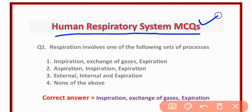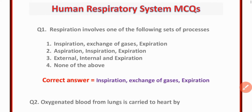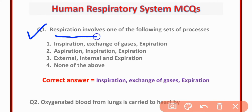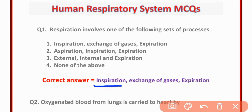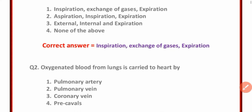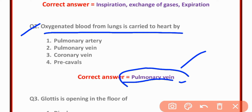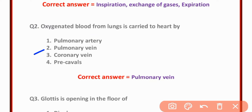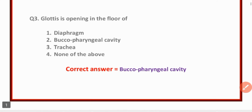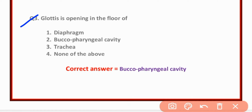MCQ number one: Respiration involves which of the following set of processes? Inspiration, exchange of gases, and expiration — option one is correct. MCQ number two: Oxygenated blood from the lung is carried out by pulmonary veins — option two is correct.